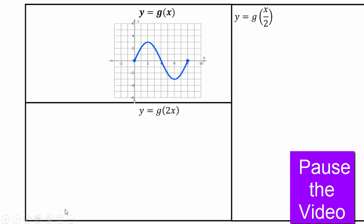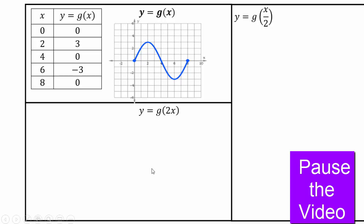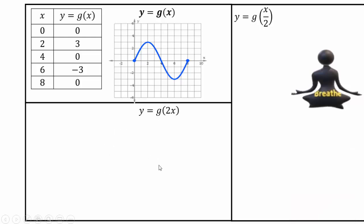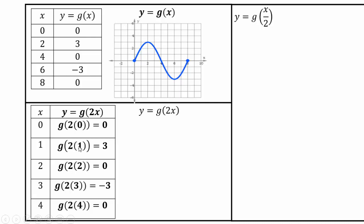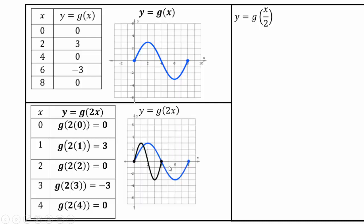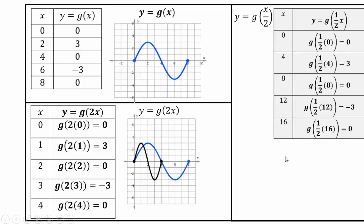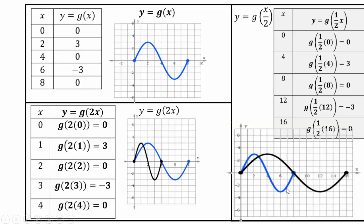Now the multiplication is with the input, not the output. This time the y coordinate remains the same and you figure out what the x coordinate would be. For g(2x): all x coordinates must be halved so that plugging in gives 2 times 0 equals 0, 2 times 1 equals 2, and g(2) equals 3. Plotting this shows a horizontal compression by a factor of 2. For g(x/2): the x coordinates must be doubled from the original — half of 4 is 2, so g(2) equals 3 — and the graph is horizontally stretched by a factor of 2. Originally going from 0 to 8, it now goes from 0 to 16.